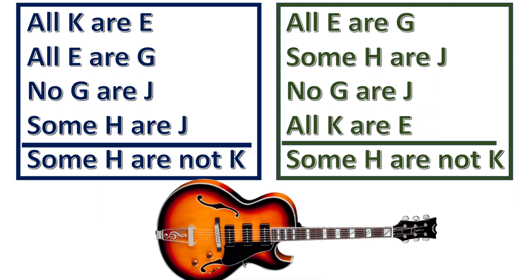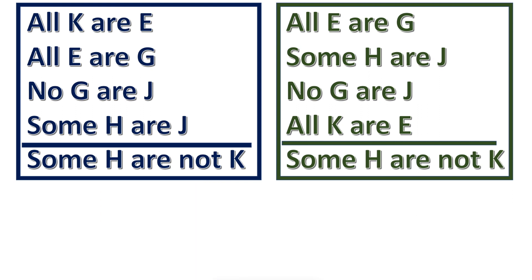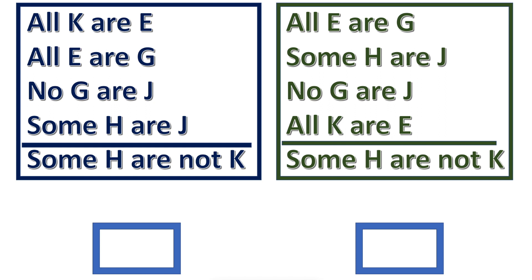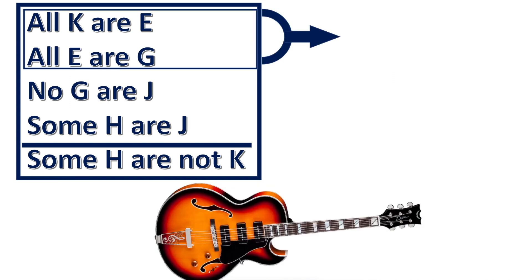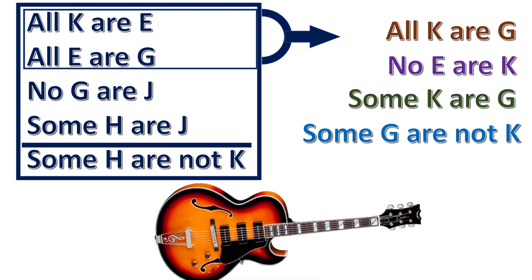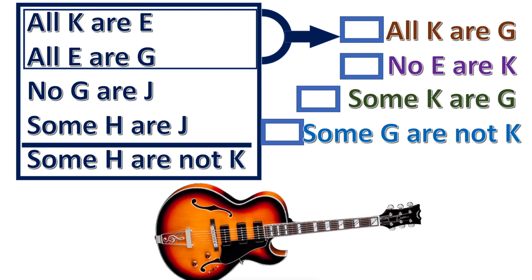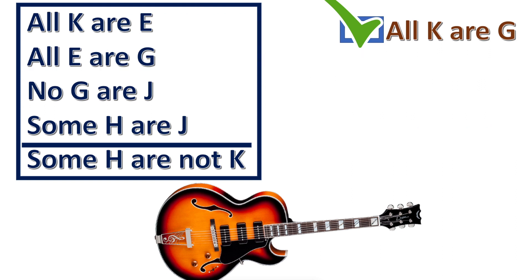Now, here is a longer sorites. Choose the one that is in standard form. Press pause if you need more time. The answer will appear in 3, 2, 1. This one is in standard form. Next, for the first two premises, what conclusion is implied? Press pause if you need more time. The answer will appear in 3, 2, 1. This conclusion follows.